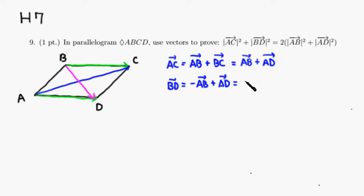If you want, you can write it as vector AD minus vector AB. So we have that.